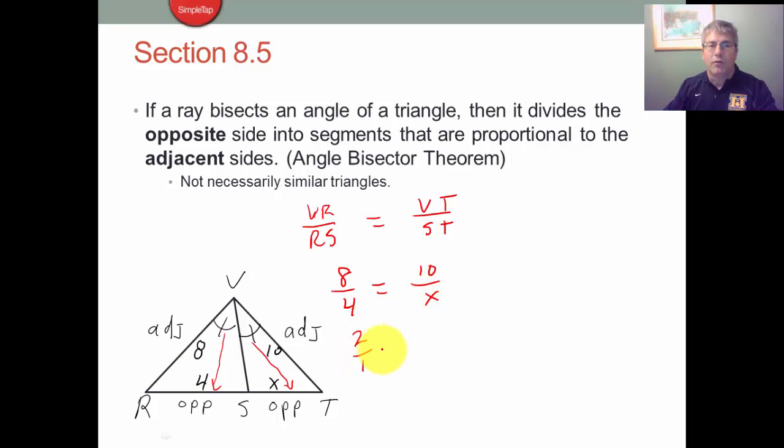So 2 is to 1 as 10 is to X, and we can see 2X is 10 and X is 5. That was pretty easy to see. This is in the ratio of 2 to 1, so 8 is to 4 as 10 is to 5. So that totally makes sense.